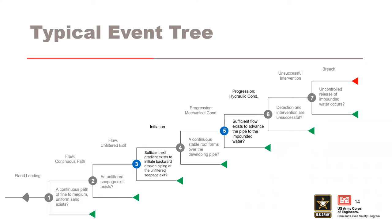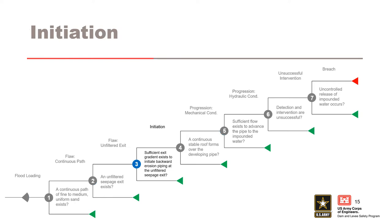As a reminder, here is the typical event tree for backward erosion piping. The flood fighting efforts primarily affected the initiation and hydraulic condition for progression nodes within the event tree. Typically, intervention is accounted for in the risk estimate through the unsuccessful intervention node. However, since this case history is an examination of past events, it's prudent to look at these two nodes separately. First, an evaluation of how the emergency efforts affected the likelihood of initiation of backward erosion piping.